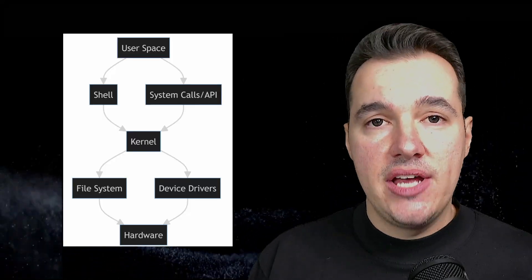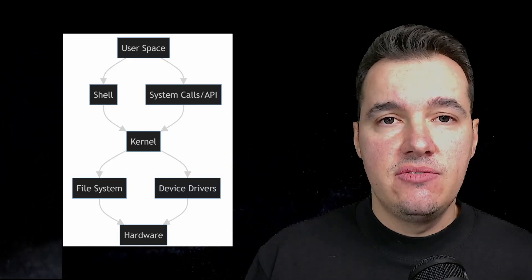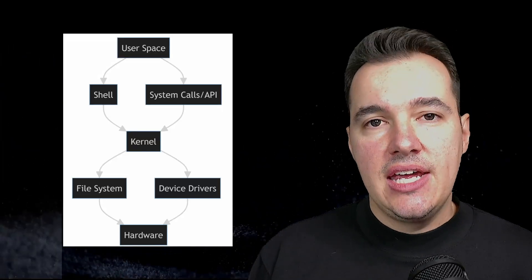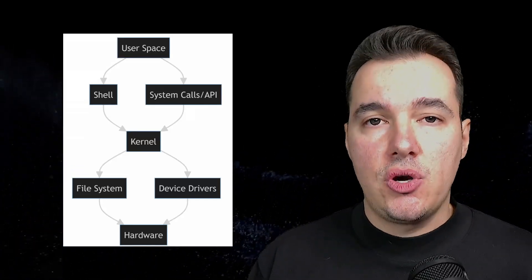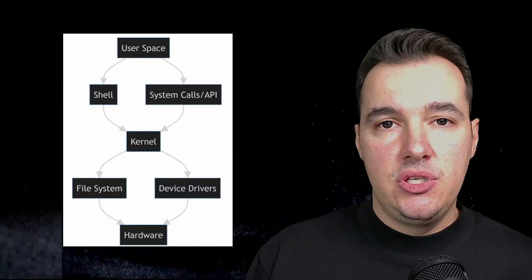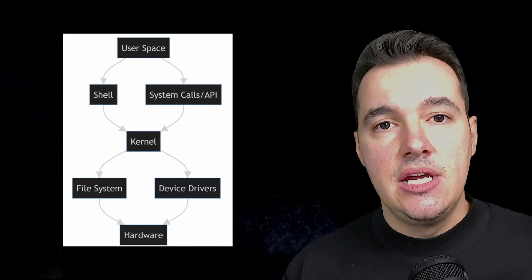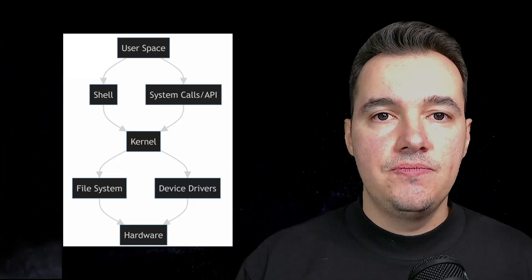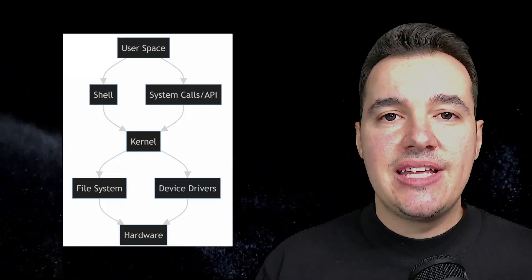This orchestration transforms a collection of parts into a functional, user-friendly device. Without the OS, your computer or smartphone would just be a pile of useless components unable to perform even the simplest tasks. At the heart of a general purpose OS is the kernel — the OS's central command, the conductor of our jazz band. The kernel operates on a CPU architecture known as the von Neumann architecture, which includes CPU, memory, input/output devices, and storage. In this architecture, the CPU fetches instructions from memory, performs calculations, and controls the overall performance of the computer system.